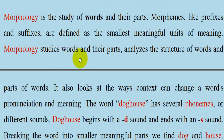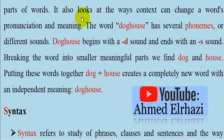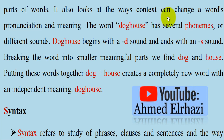Morphology studies words and their parts. It analyzes the structure of words and parts of words. It also looks at the ways context can change a word's pronunciation and meaning — for example, changing a verb into a noun.